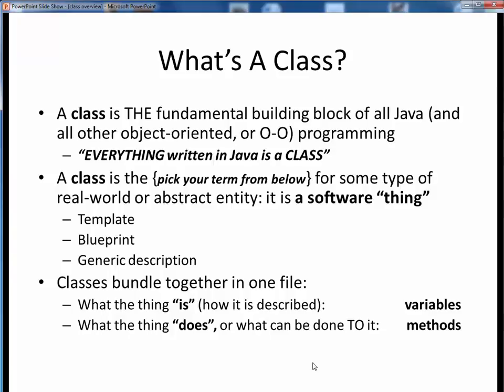So let's start with a class. A class is the fundamental building block in all of Java, and more generally, in all object-oriented programming. As you'll see over and over again, everything you write in Java will be a class. A class is a template, or a blueprint, or a generic description of some real-world or abstract entity. It's a software thing or building block.